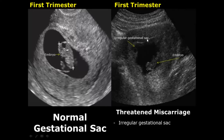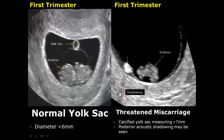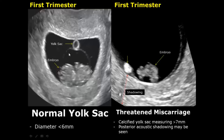The next feature is an irregular gestational sac — in the normal case the gestational sac is very smooth, but in this case the inner walls are irregular. The next feature is a calcified yolk sac that measures greater than 7 millimeters. A normal yolk sac is circular with an anechoic or hypoechoic center and a hyperechoic rim, and the diameter is usually less than 6 millimeters. The calcified yolk sac is hyperechoic and may have posterior shadowing.